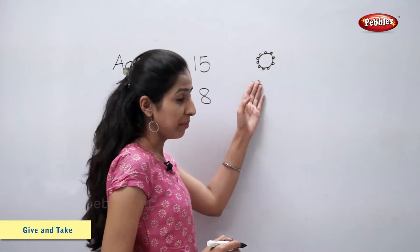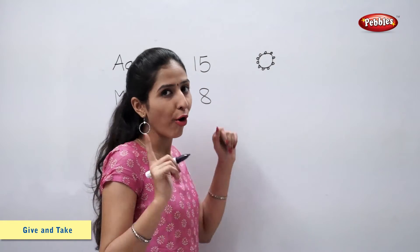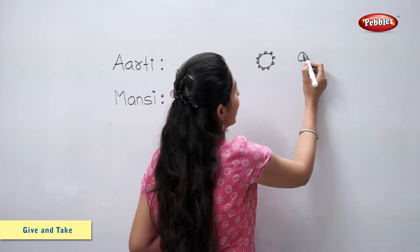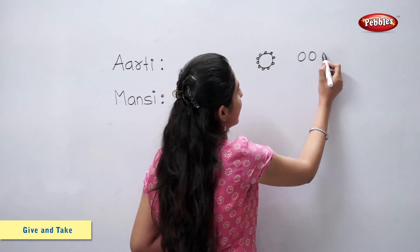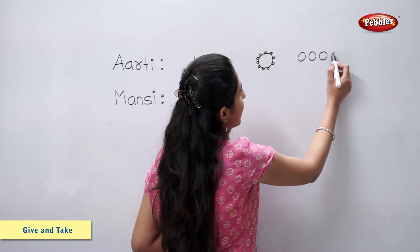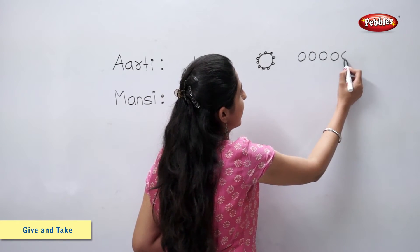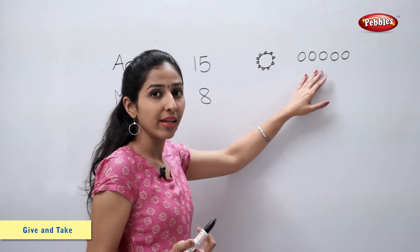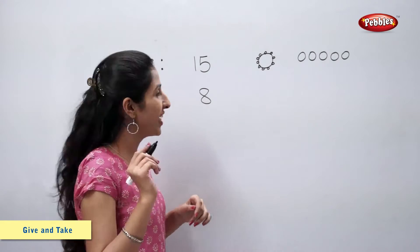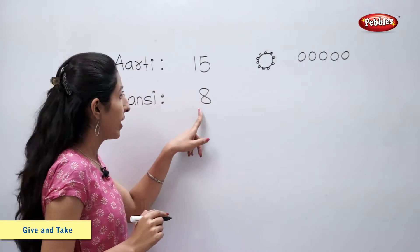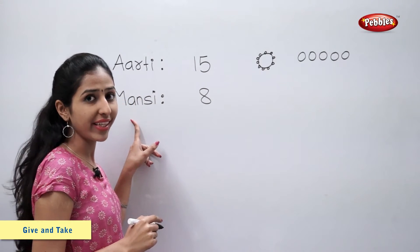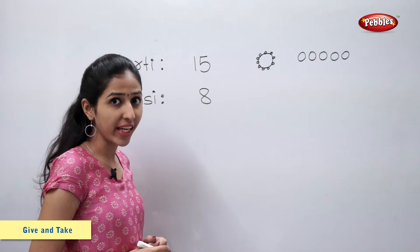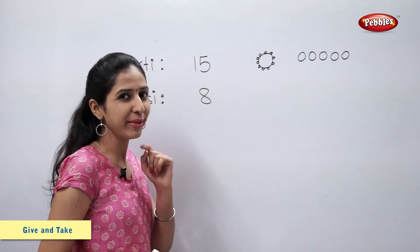Aarti had 15 pearls, so that means she had 1 bangle of 10 pearls and 5 loose pearls. She gave 8 pearls to Mansi, so let's take away 8 pearls.